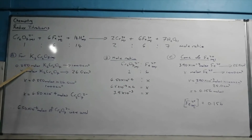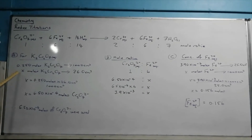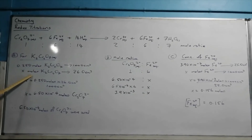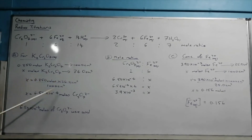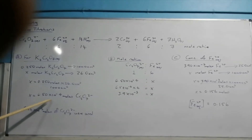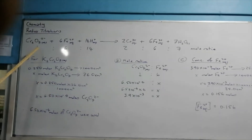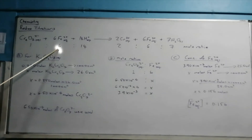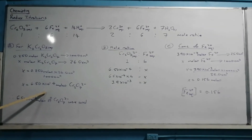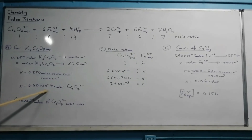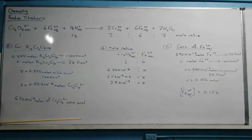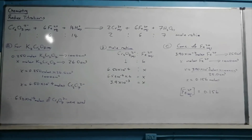For potassium dichromate, this is the standard solution, so we know the concentration: 0.25 moles is present in 1000 cm³, which is 1 dm³. To find how many moles of potassium dichromate we have in 26 cm³, we cross multiply and get 6.5 × 10⁻⁴ moles of dichromate. Looking at the mole ratio — 1 mole of dichromate reacts with 6 moles of Fe²⁺ — so 6 × 6.5 × 10⁻⁴ = 3.9 × 10⁻³ moles of Fe²⁺ were used.